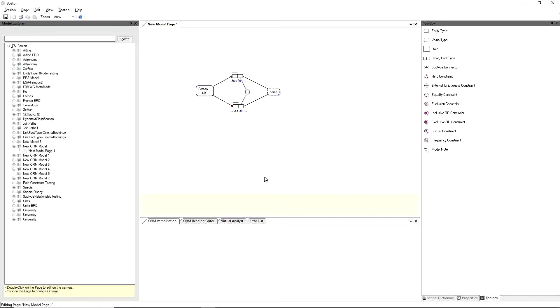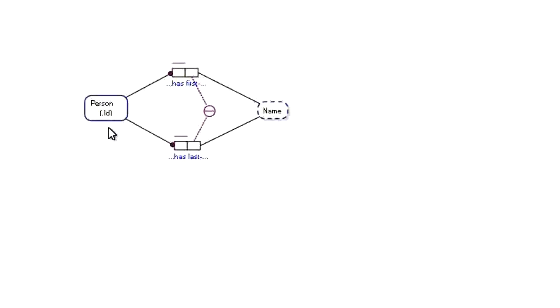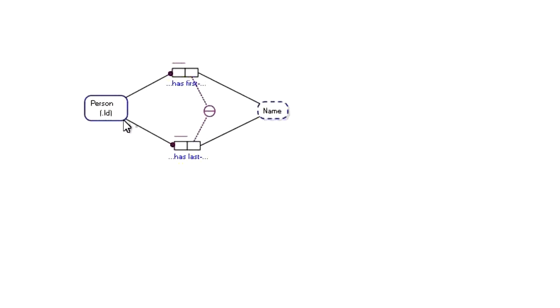Hi, this is Victor Morgan here from VIVE. You're looking at the Boston Conceptual Modeling Tool. Today we're going to be talking about reference schemes on entity types. We have a model before us where a person has a first name and a last name. The combination of first name and last name is unique, and we can see on person in brackets here 'ID'. Now that ID is the reference scheme of the entity type person.